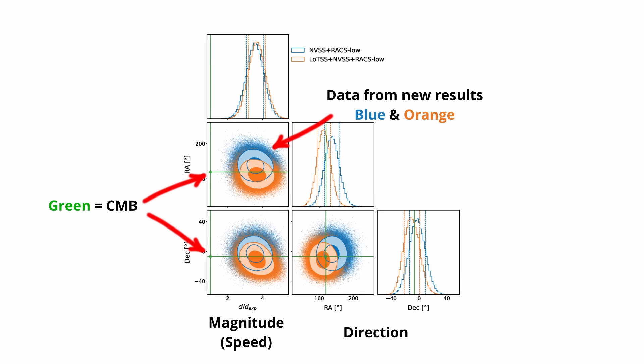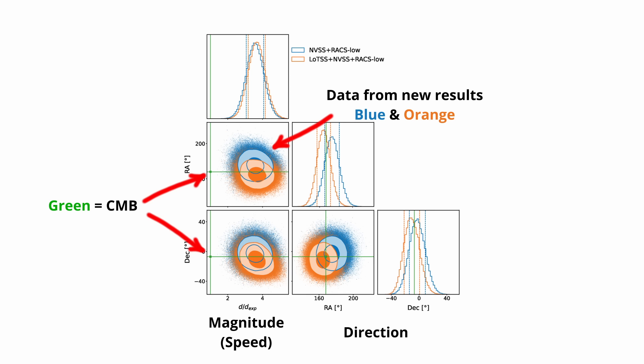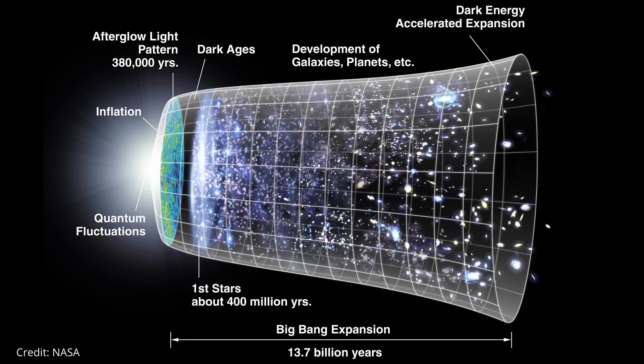Once you take the radio results seriously, the deeper issue isn't the number itself, it's everything the number touches. Because if matter on the larger scales implies a much higher velocity than the CMB, the contradiction isn't in the data, it's in the interpretation. Lambda CDM expects every large-scale probe to converge on the same rest frame. The CMB defines the baseline. Matter should trace it. The shared reference frame is not a decorative detail, it's one of the quiet load-bearing beams of the entire structure. So when a correct, cross-validated, multi-survey matter dipole refuses to converge on the CMB velocity, it means something in that foundational link between early-time radiation and late-time structure is misbehaving.